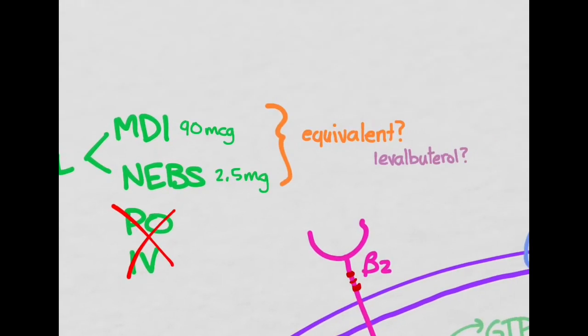Now there's another albuterol out there. It's called levo-albuterol because, as you know, there are enantiomers, right-handed and left-handed enantiomers. And supposedly the L-albuterol is more beta-2 selective, so it's going to cause less heart rate increases. But the studies have not shown that it's really that much more helpful. So just use normal albuterol.